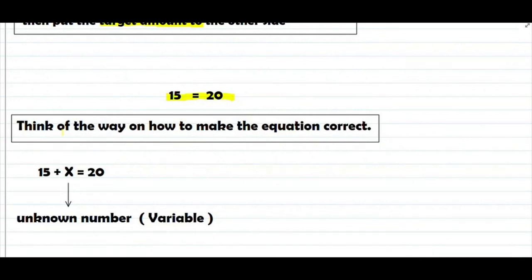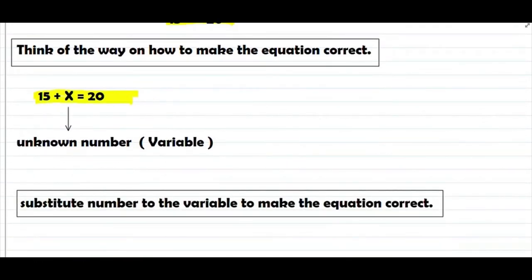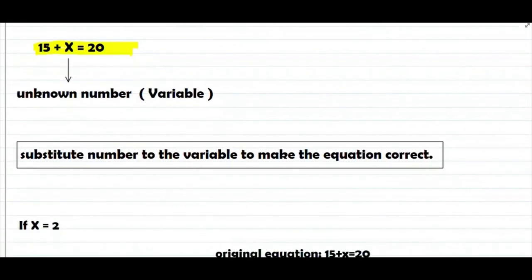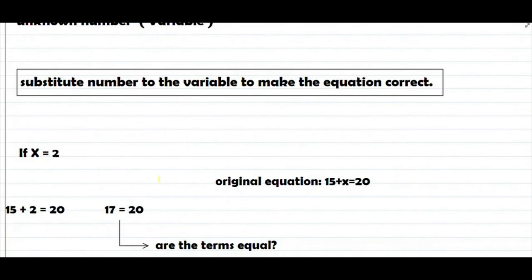Iko-correct mo ngayon yung equation sa paglalagay ng tamang variable. Ang gagawin natin is 15 plus x equals to 20. Maghanap tayo ng number na isasubstitute natin sa letter x para maging correct yung ating equation. Ang original equation is ito: 15 plus x equals to 20.